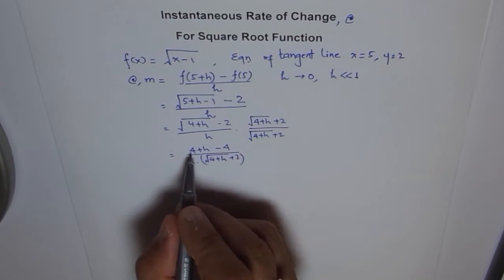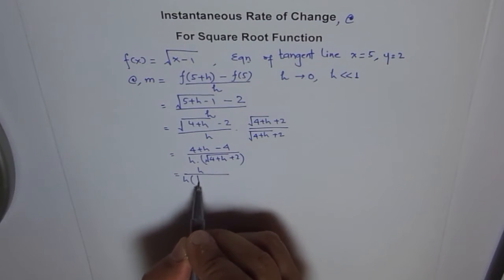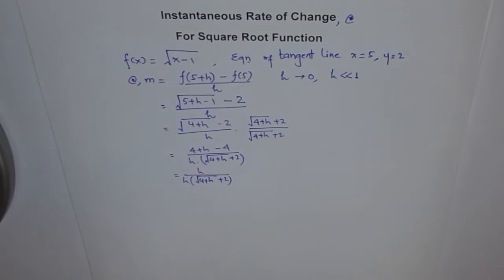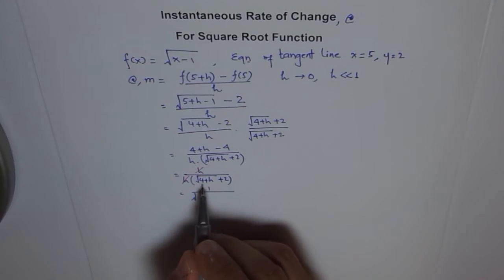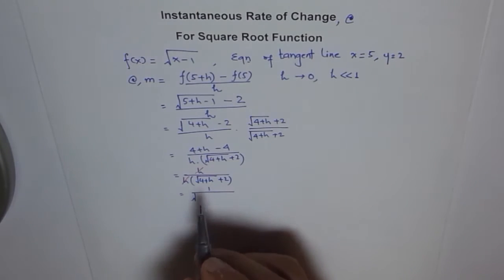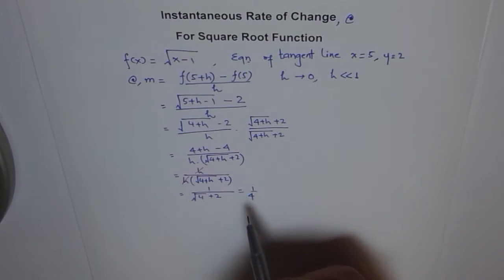Now here 4 minus 4 is 0, so we are left with h in the numerator. And we have h times square root of 4+h plus 2. Now h and h will cancel out. Since they cancel out, we are left with 1 over square root of 4+h plus 2. Now h is very small, tending to 0, so we can just forget about it. And we say it's just square root of 4 plus 2, and this square root of 4 is 2. So it is 1 over 4. So we get our slope at x equals 5 as 1 over 4.